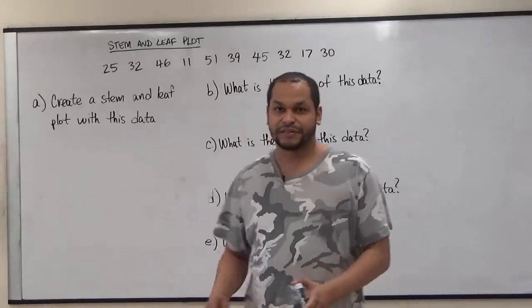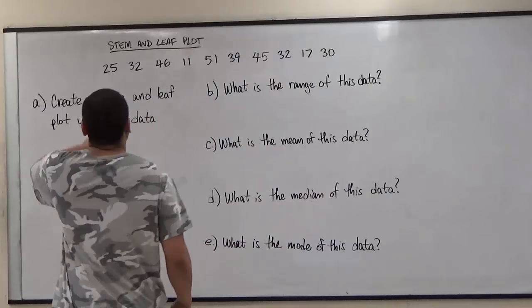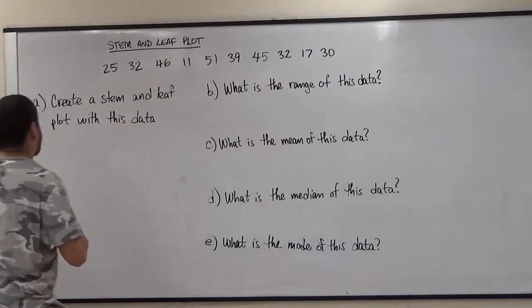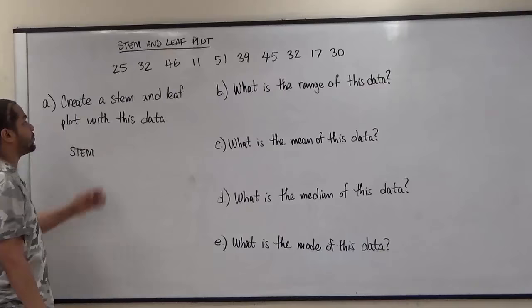The first thing we have to understand when making a stem and leaf plot is that we want to look at every tens digit and every ones digit for all the data and account for each tens place. Each tens place is going to be called the stem, while every ones position is going to be called the leaf.